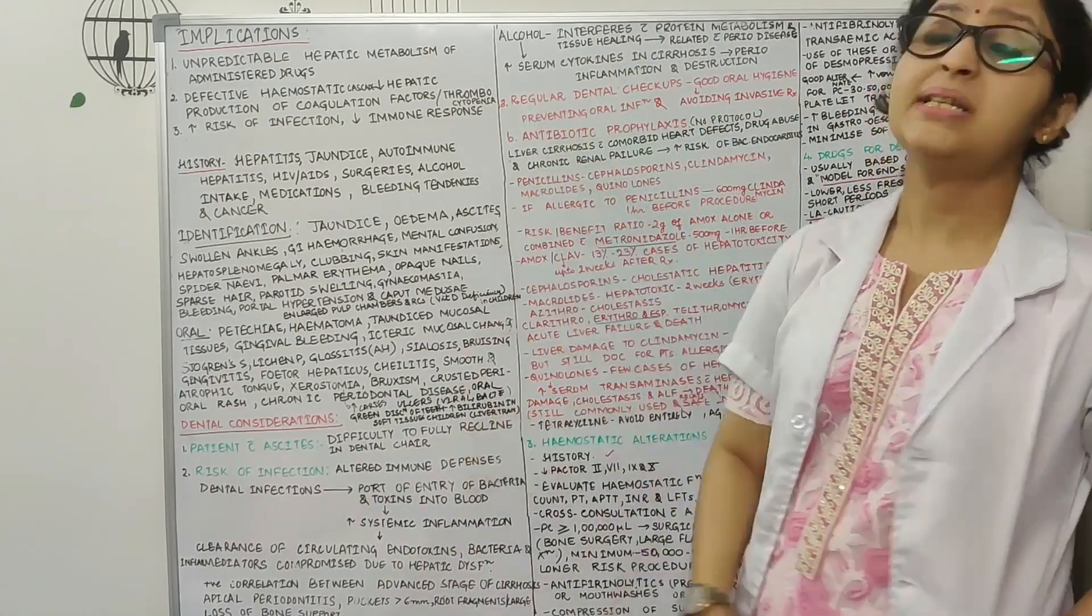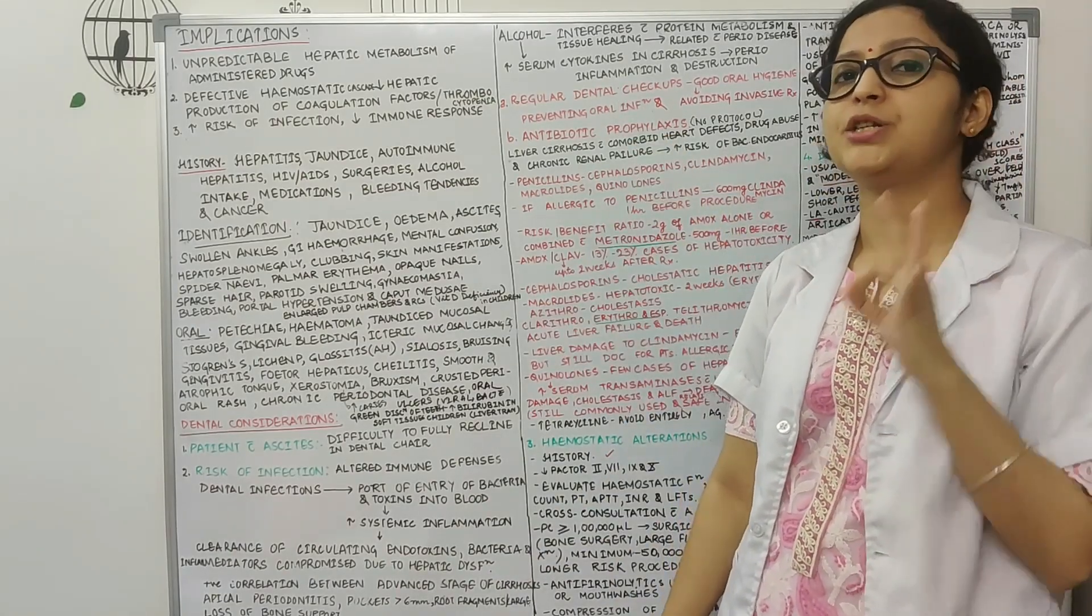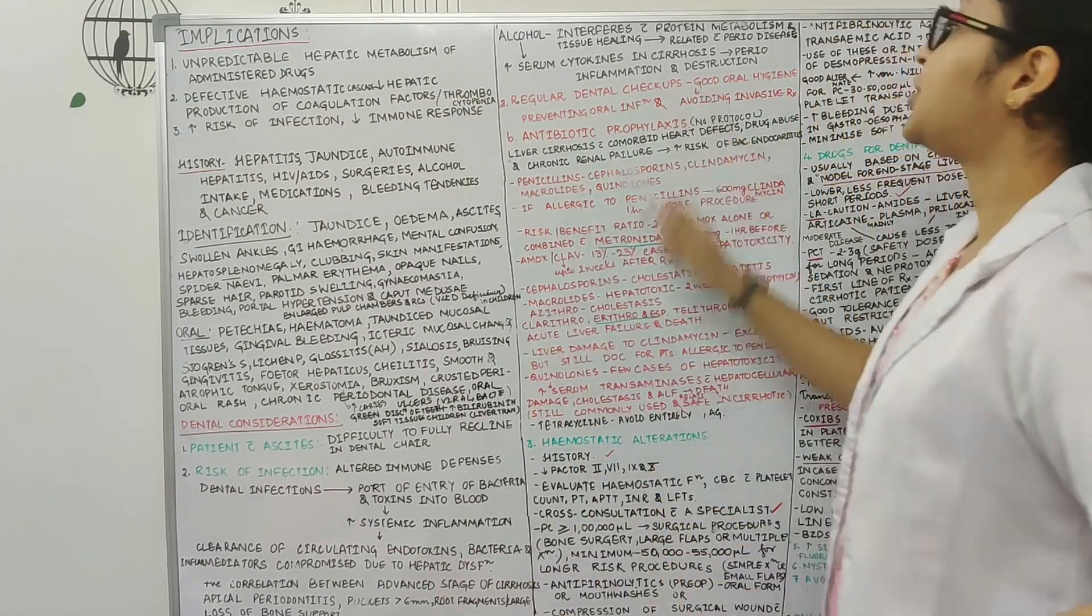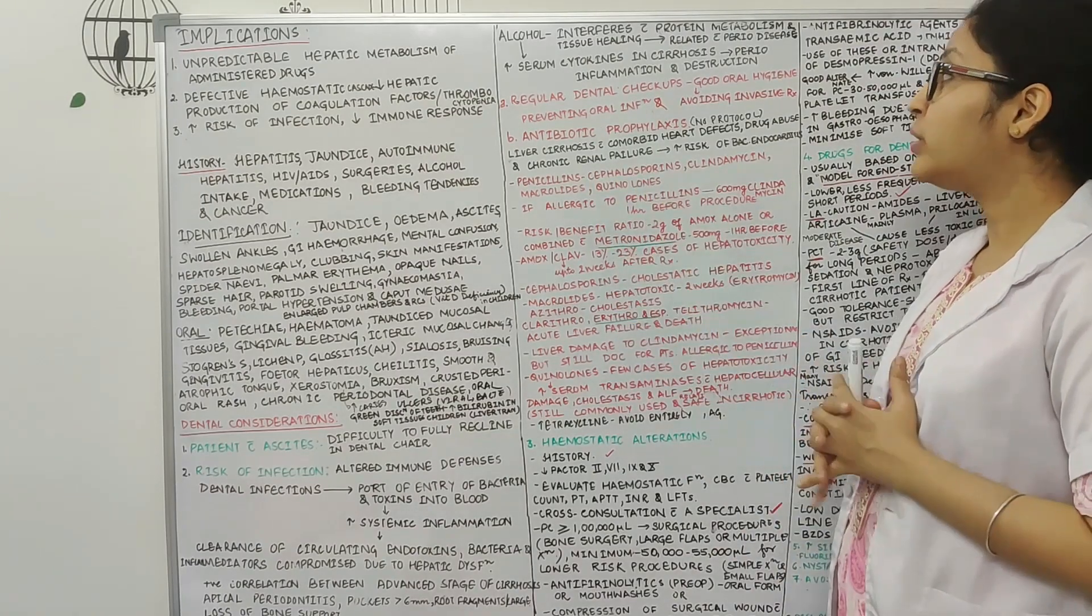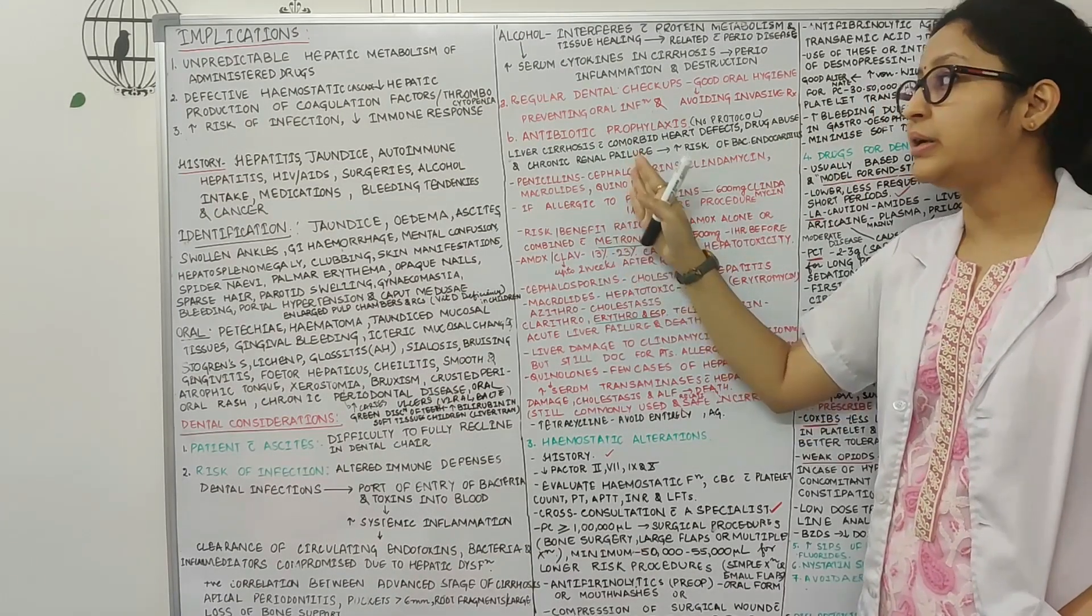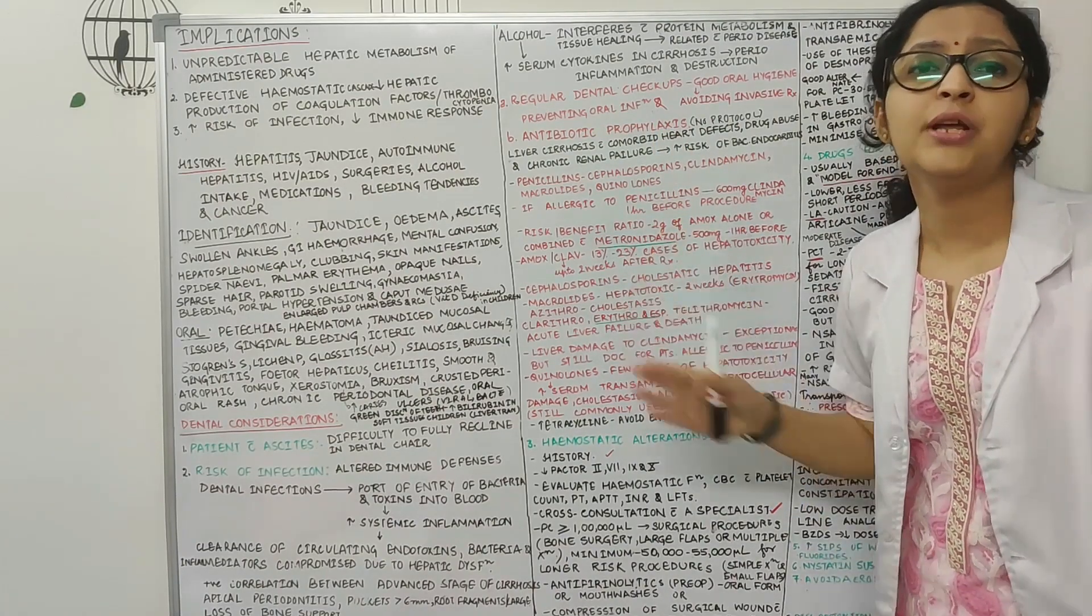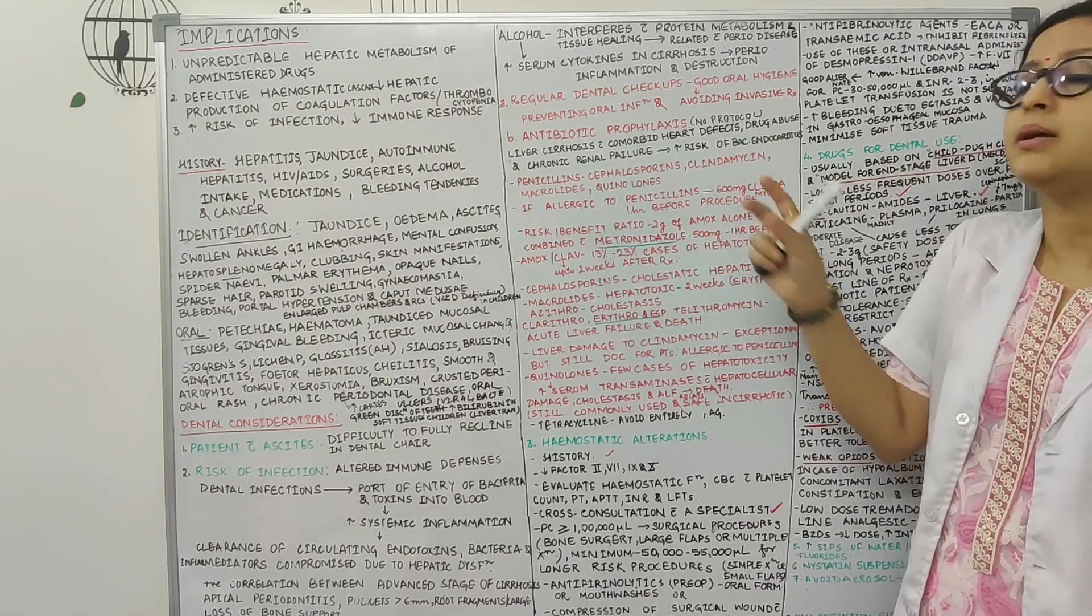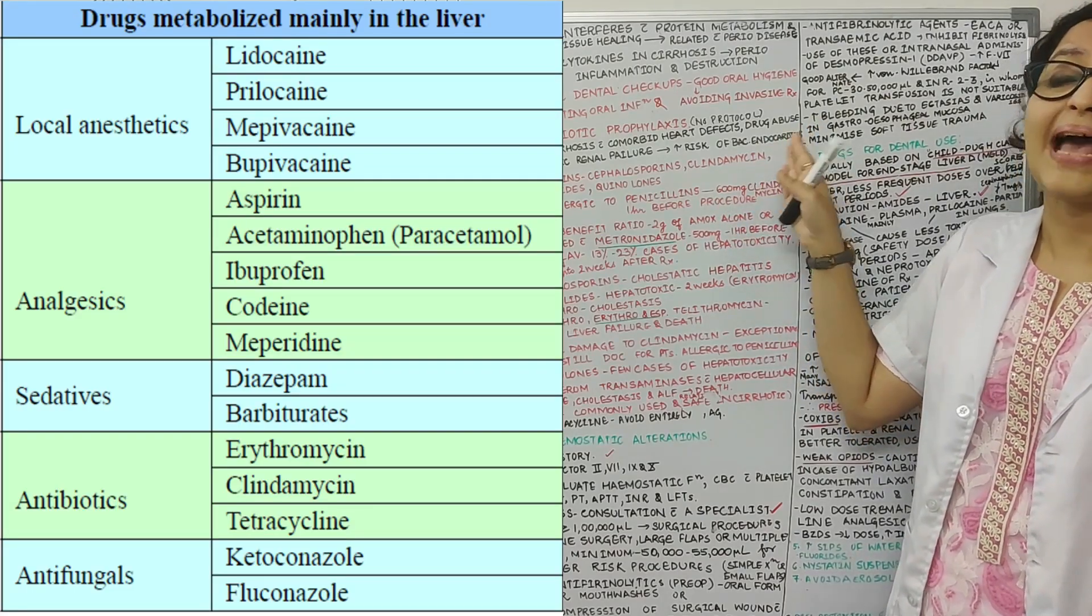Then the next thing, because these patients are at a higher risk of infection, it is advised that these liver patients go for regular dental checkups, they should maintain a good oral hygiene and they should prevent oral inflammation and they should avoid invasive treatment. So whenever we are treating a liver patient antibiotic prophylaxis is very very important. So we usually can prescribe amoxicillin in these patients because amoxicillin is metabolized in the kidney and not in the liver.